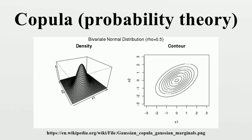The density can be written as a formula involving the identity matrix. Archimedean copulas are an associative class of copulas. Most common Archimedean copulas admit an explicit formula, something not possible for instance for the Gaussian copula.